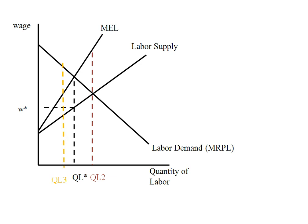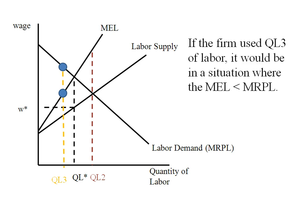What if instead we're over here using QL3? Now the marginal revenue product of labor — the value of the worker to the firm — exceeds the marginal expenditure on labor. So the value of the worker exceeds the cost in marginal terms, and the firm would want to be using more labor. So we've got these competing factors on either side driving us to QL star. But because it's a monopsonist, they can actually drive the wage down to the labor supply curve.